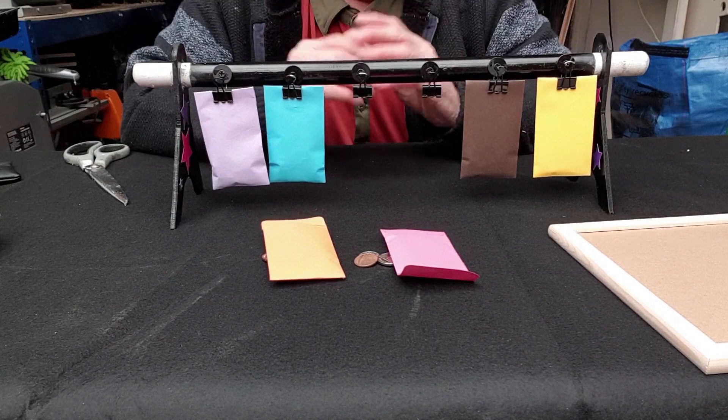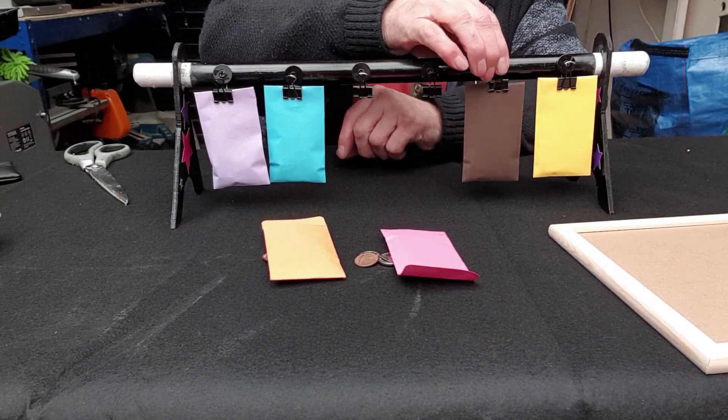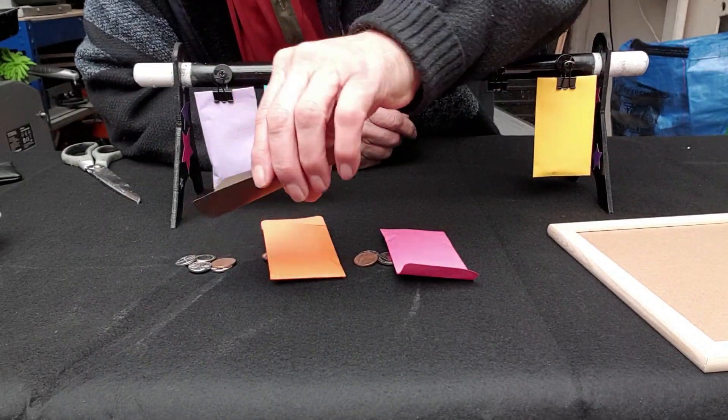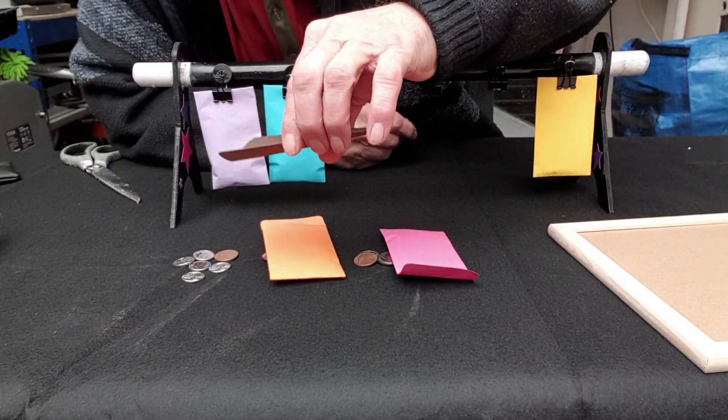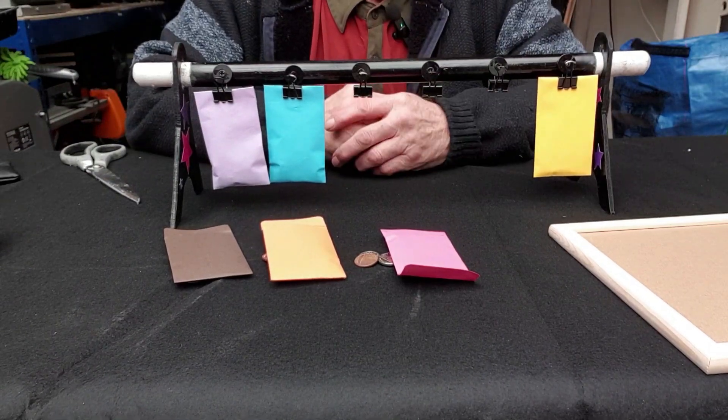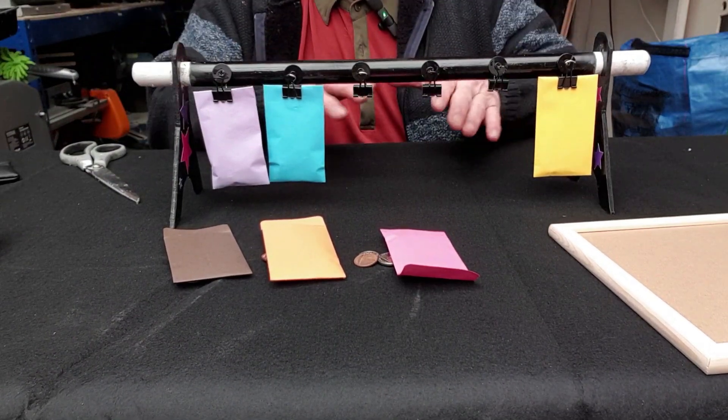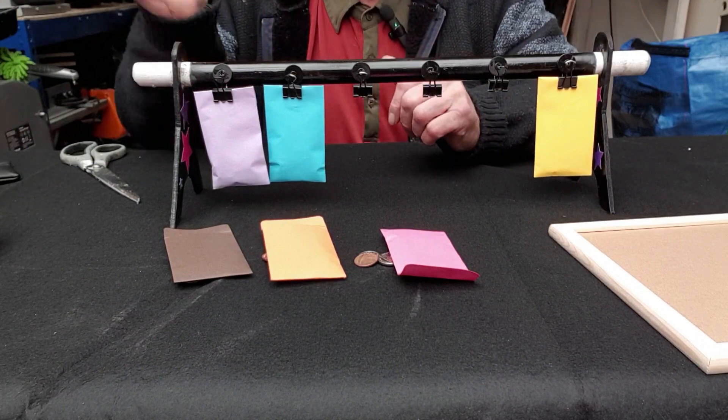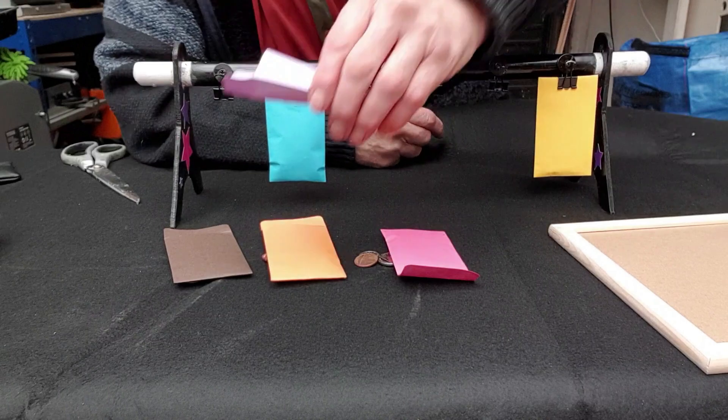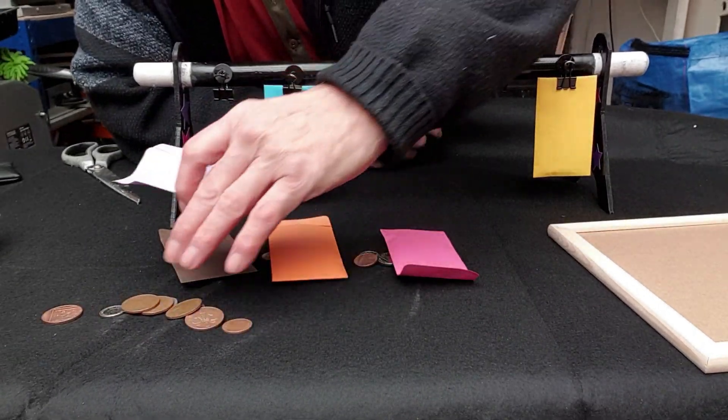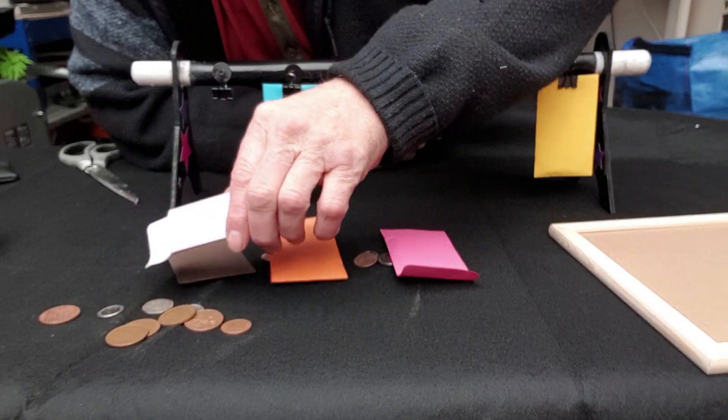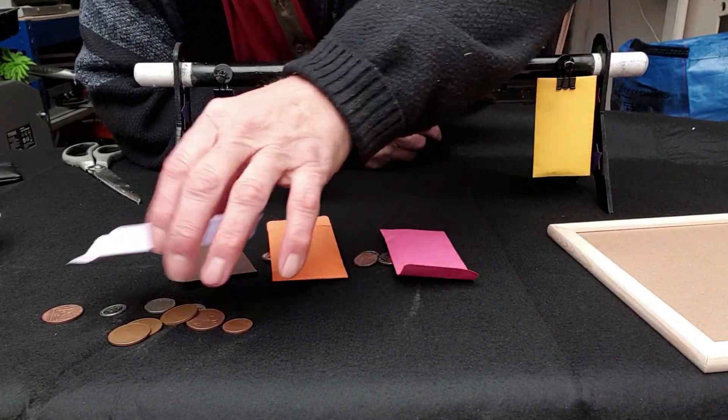Next spectator has a choice, completely free. He says I'll take the brown one. He picks it up, tips the money out. And he's got 10, 25, 26 pence. No problem. Another spectator comes along, has a choice, changes mind if he wants to, completely free. I'll have the purple one. He tips it open. Oh, he's got 20, 30, 2, 4, 6, 8, 10, 41p.